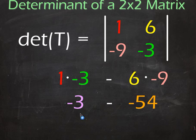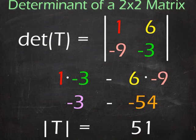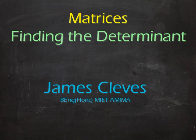So the answer to this one will be 51. So the determinant of this 2 by 2 matrix is 51, and that is it. If you have any questions or comments just let me know and thanks for watching.